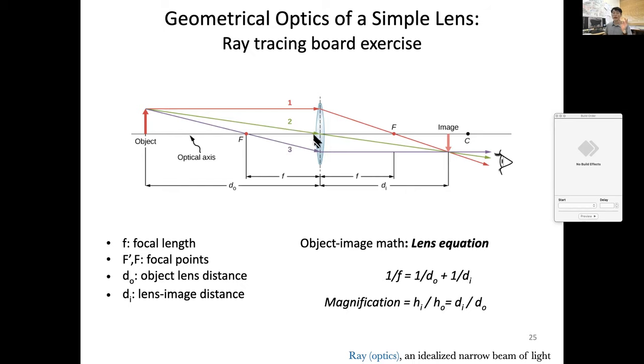Then, look at the geometric relationship of this object. Distance from the lens, and let's define as d sub o, and the image formed, the distance is d sub i. Then from here, you can find the geometric relationship of similarity.